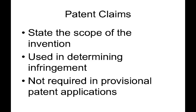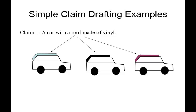A regular patent application has at least one claim. Provisional patent applications do not require any claims, but many patent professionals include at least a few claims in provisional applications. Here we are going to discuss a set of very trivial sample claims. These are not real claims — the purpose is simply to show how claim coverage works with multiple claims. In our example, claim 1 claims a car with a roof made out of vinyl. That means, while we are not claiming that we invented the car, or even the concept of a roof on a car, we are claiming that we invented the concept of a vinyl roof on a car.